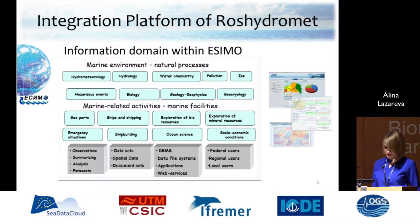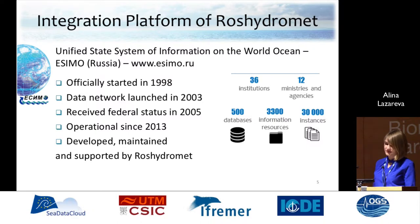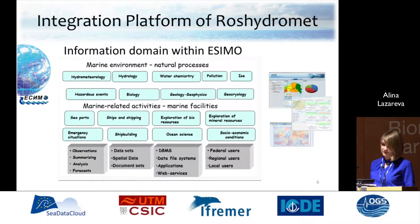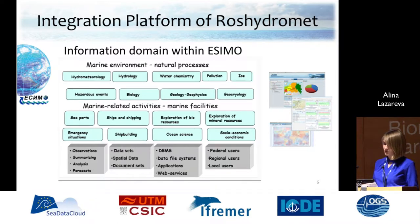This system includes 36 institutions and organizations from 12 ministries and agencies. It integrates 500 datasets represented in 3,300 information resources, comprising over 30,000 instances. The system includes data from different domains like hydrometeorology, hydrology, water chemistry and pollution, ice and hazardous events, as well as data from marine-related activities. It provides access to large data holdings with a monthly data flow of hundreds of terabytes.